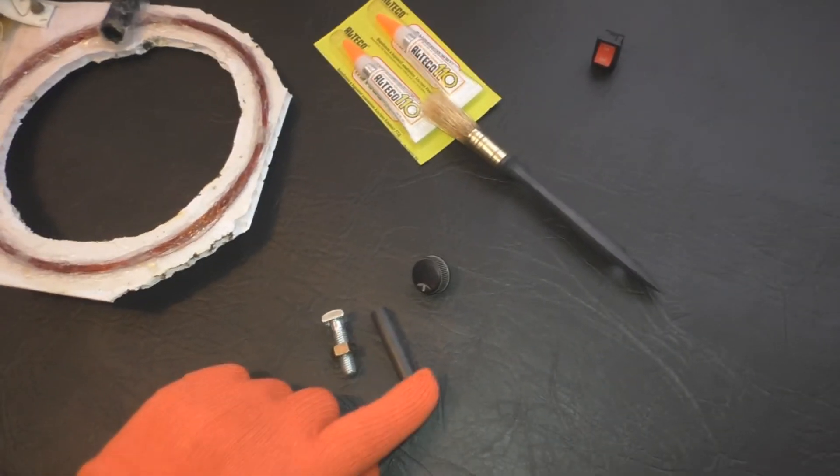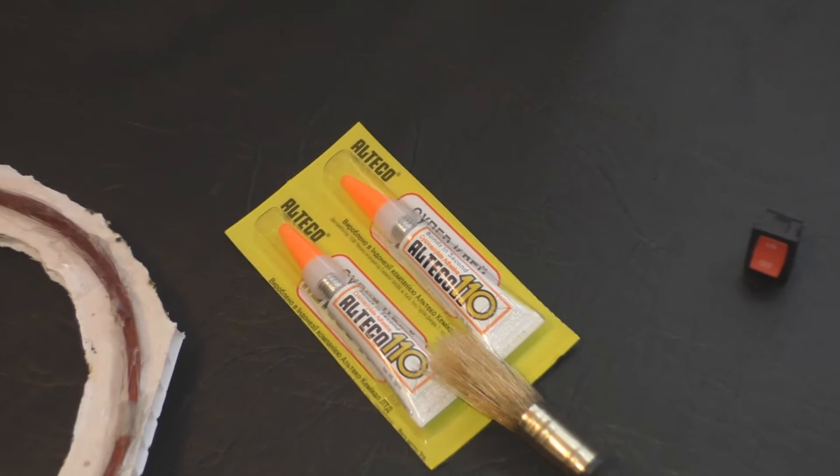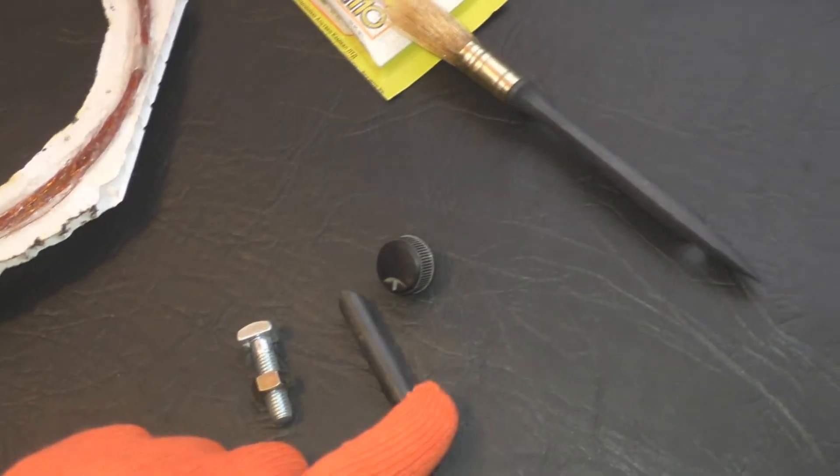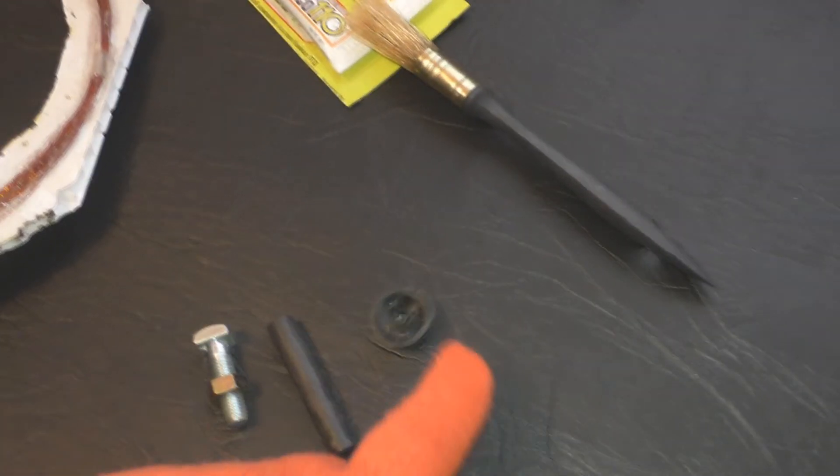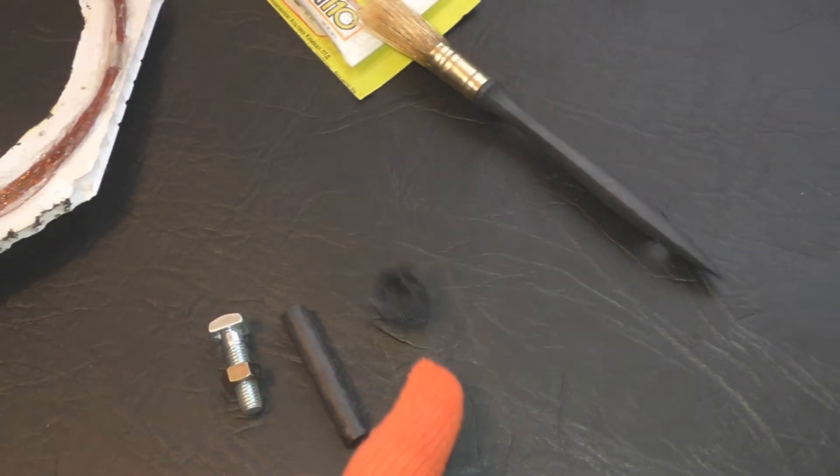The first thing that we need to do is to glue it with super glue to our ferrite, the handle, so that we can be able to regulate the field.